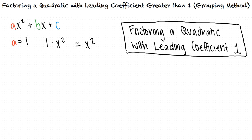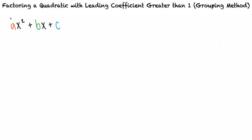But what if a isn't equal to 1? If the leading coefficient a is not 1, we must take into account all of the coefficients in the equation, not just the b and c coefficients. To determine what factors multiply to ax squared plus bx plus c, we must first multiply the a and c coefficients to determine what factors of the product ac add up to the b coefficient. We can make a chart like this to keep track of our numbers.